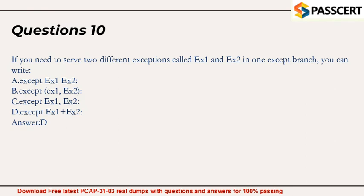Question 10. If you need to serve two different exceptions called x1 and x2 in one except branch, you can write: A. accept x1 x2. B. accept x1 x2. C. accept x1 x2. D. accept x1 plus x2. Answer: C.